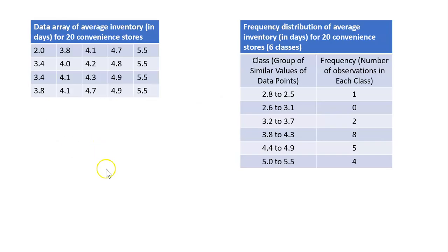Here these are the groups, and we have created these groups. There are six classes—one, two, three, four, five, and six. And this frequency is the number of observations in each class. Now there are certain gains and certain losses when we go from data array to frequency distribution.